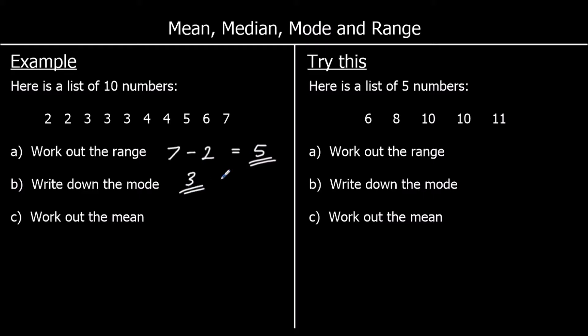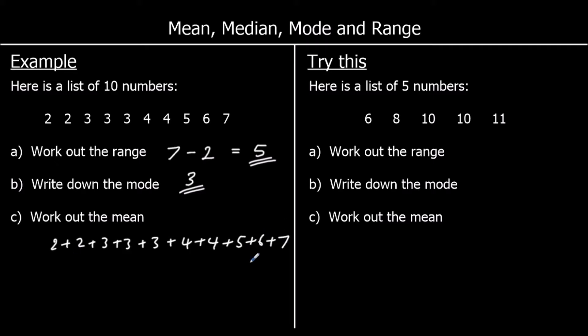The mean is the average that's used most often. When people say average, they usually mean the mean. To find the mean, we add up all the numbers and divide by how many there are. So we're going to do two plus two plus three plus three plus three plus four plus four plus five plus six plus seven, all added together and divided by how many there are, which is ten.